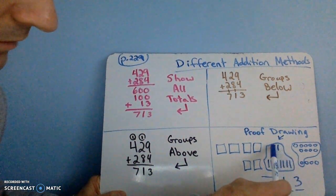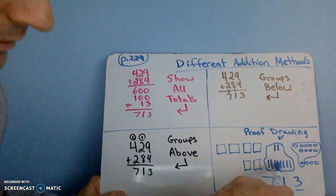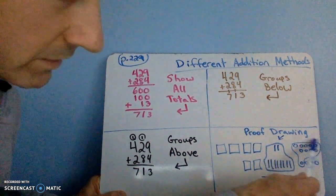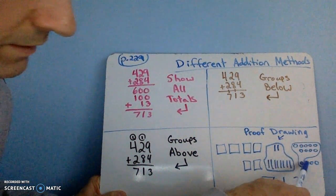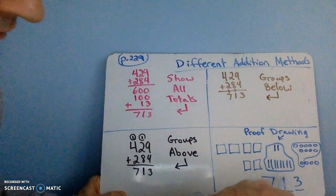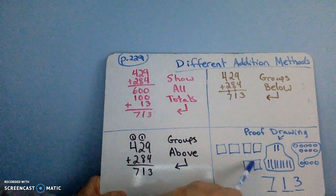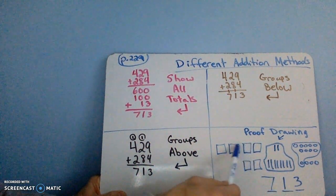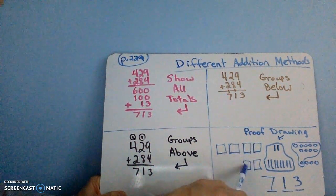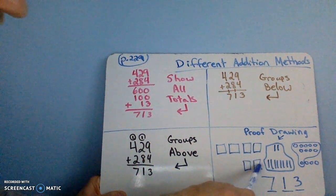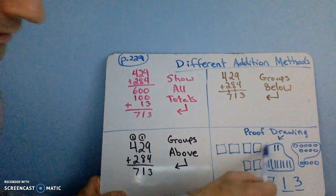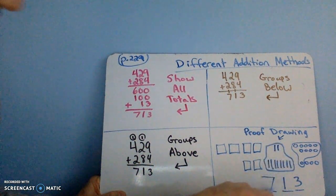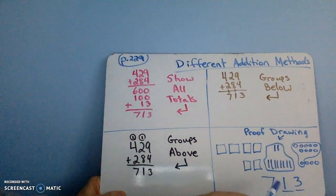How many tens? There are 10 here, but that became 100, so we only have 1 ten. And how many hundreds? 100, 200, 300, 400, 500, 600 — and the one that you boxed in, which is 700. So 713.